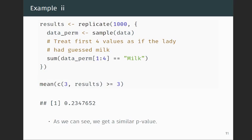And now let's do some permutations. So first, I'm going to sample or permute the observations in data without replacement. So using the sample function. Now data perm is a rearrangement of all of those values from data. And we're just going to treat the first four values as what the lady guessed was milk. And then similarly, the last four values would be what the lady had guessed is tea.